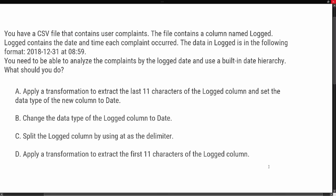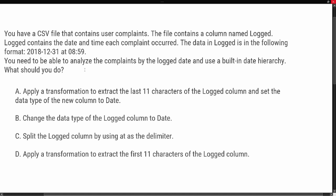The question says we have a CSV file containing user complaints. The file has a column named 'Log' that contains the date and time each complaint occurred, in the format: 2018 (year), 12 (month), 31 (day), at 8:59 (the time). We need to be able to analyze complaints by the log date and use the built-in date hierarchy. As always, we have to identify the key pieces of information — including the 'at' in the format.